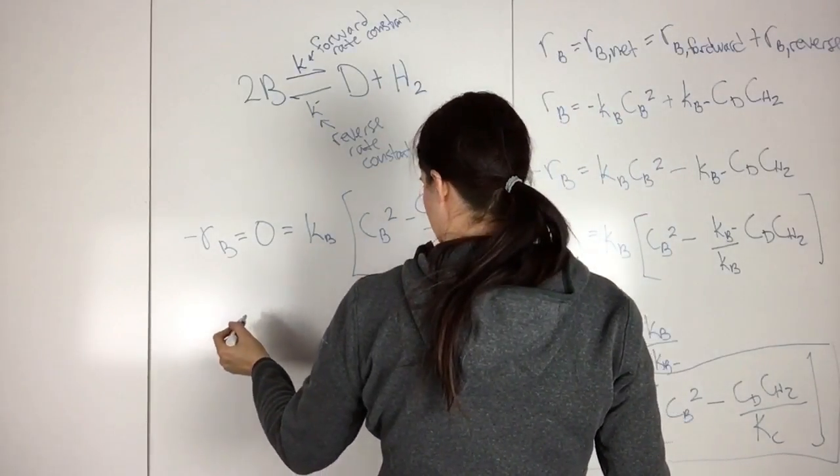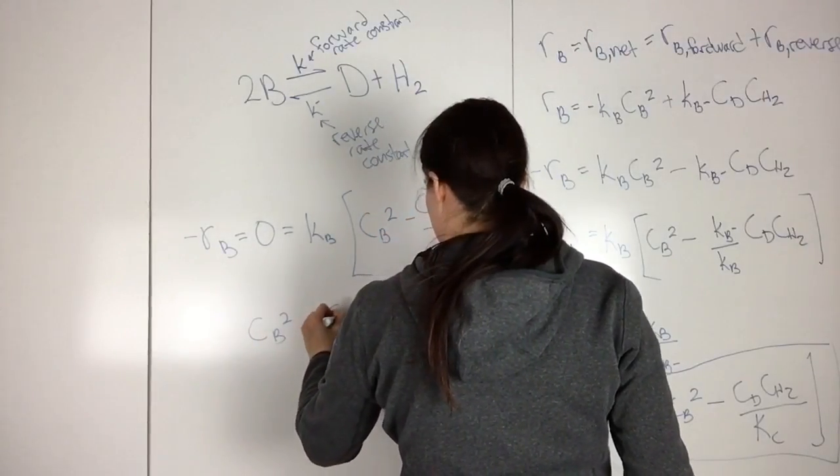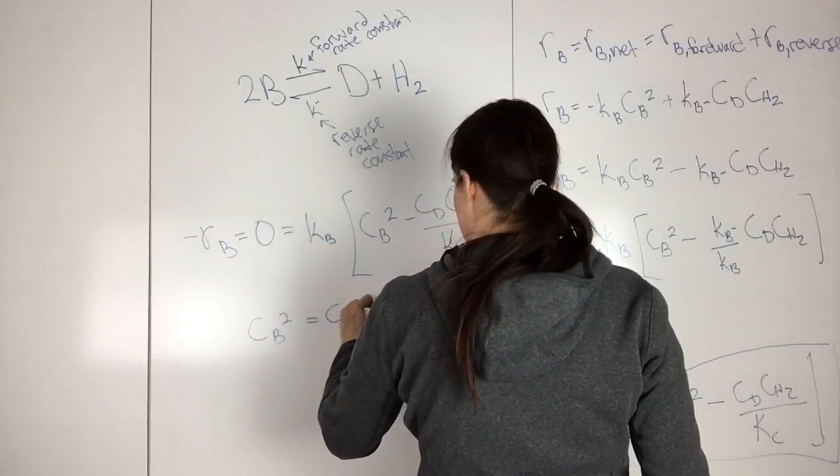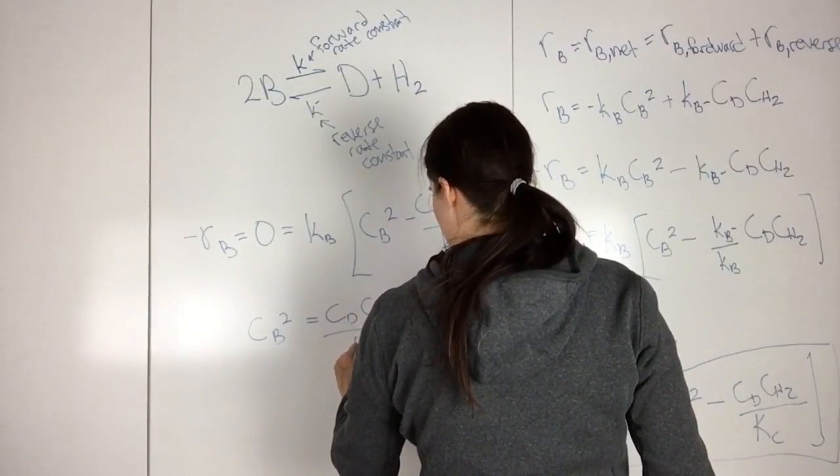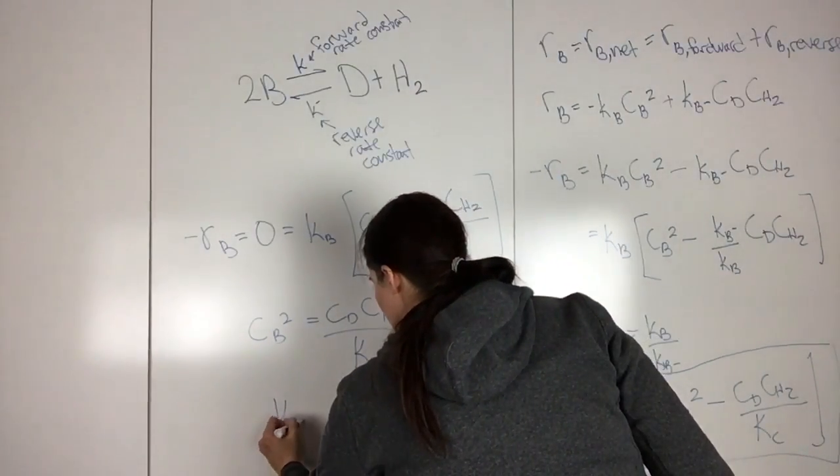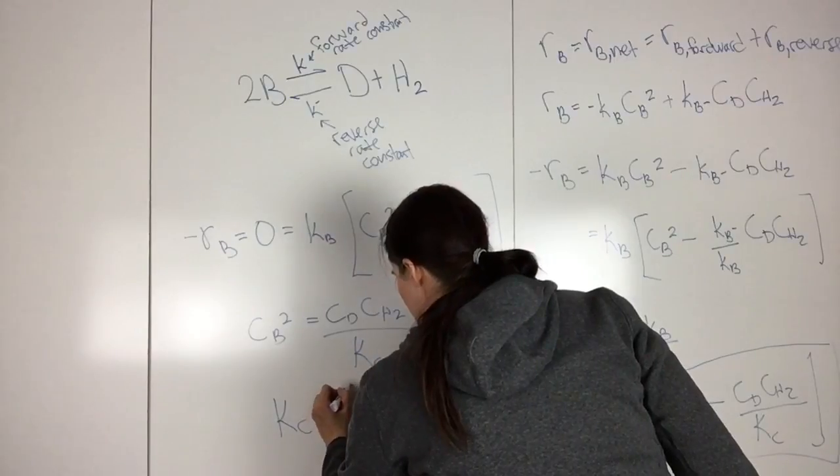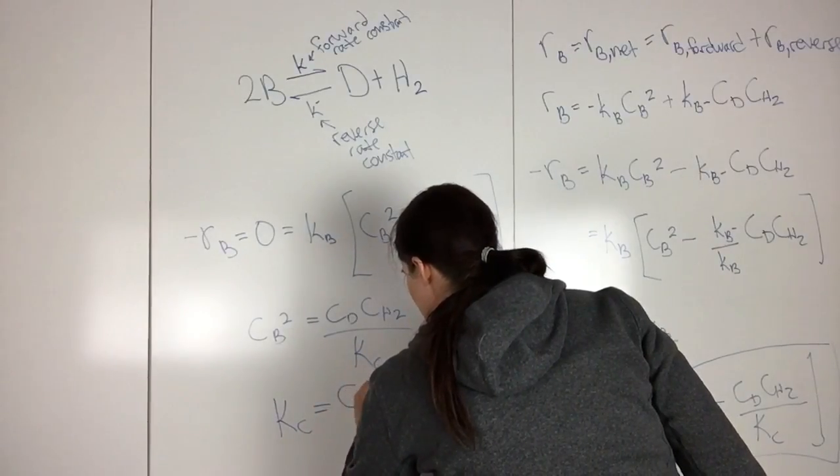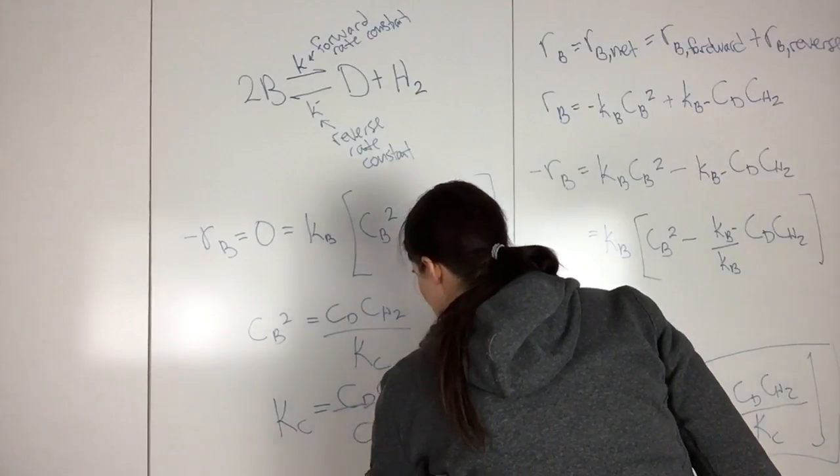So then solving this, you get CB squared equals CD CH2 over KC. And then KC is equal to CD CH2 over CB squared.